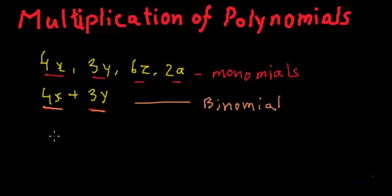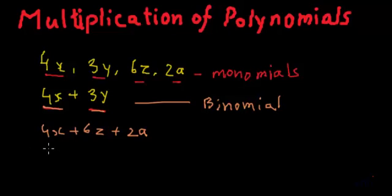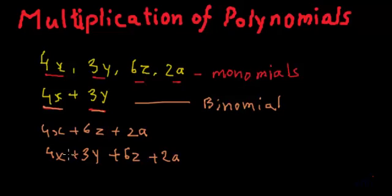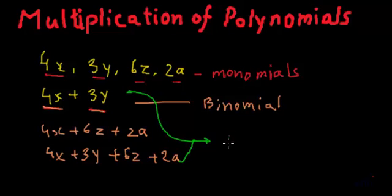We can also have expressions with more than two terms, like 4x plus 6z plus 2a, which has three terms. Or 4x plus 3y plus 6z plus 2a, which has four terms. Expressions which have two or more terms are called polynomials.